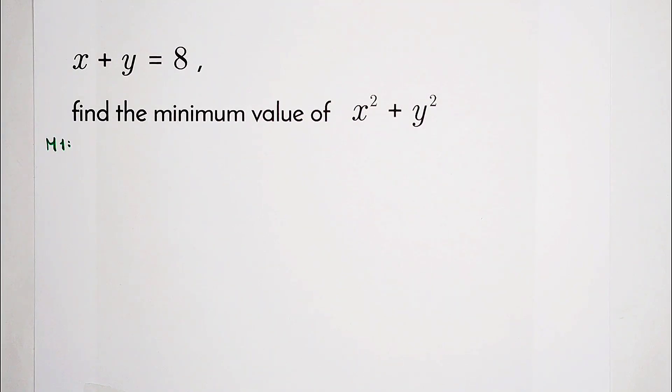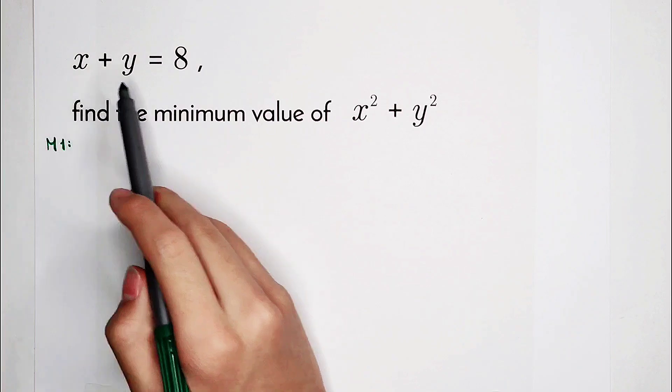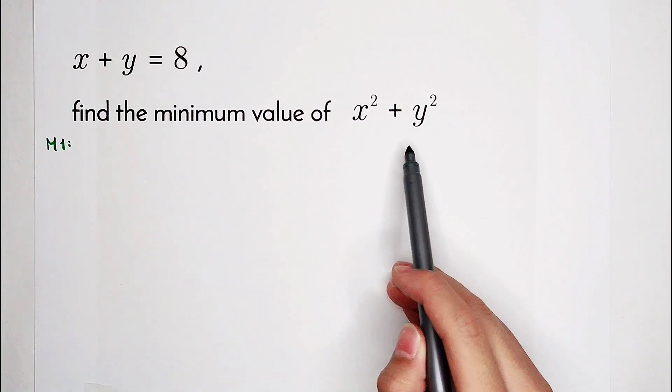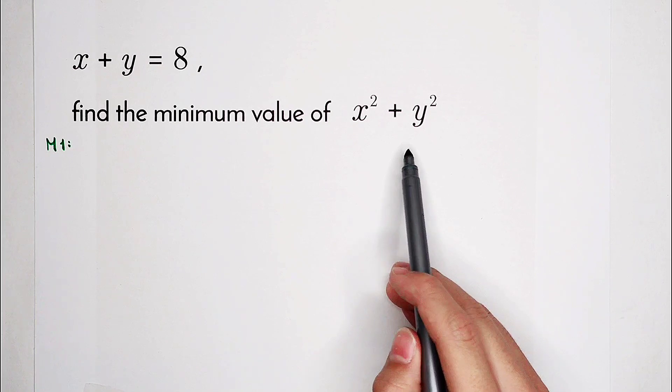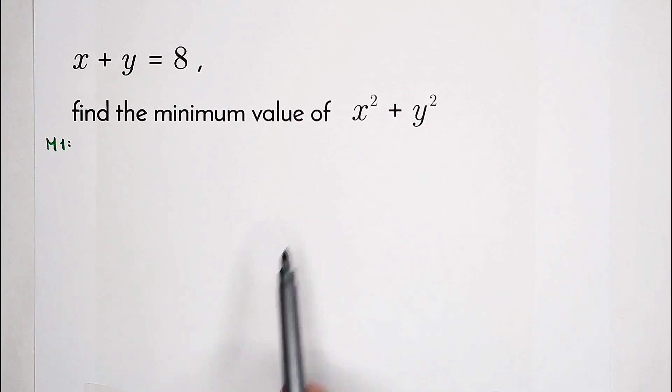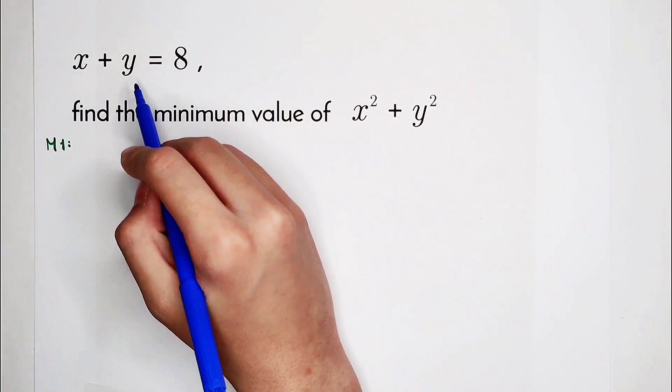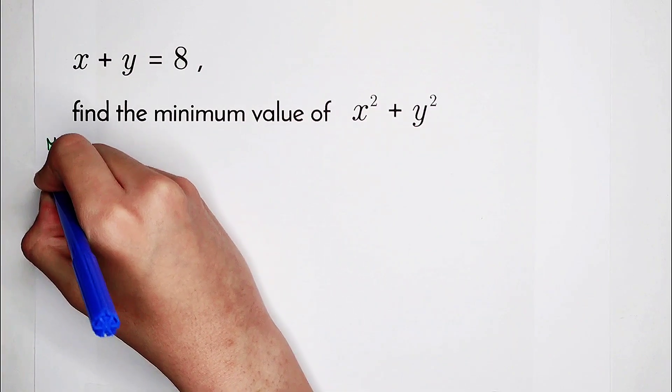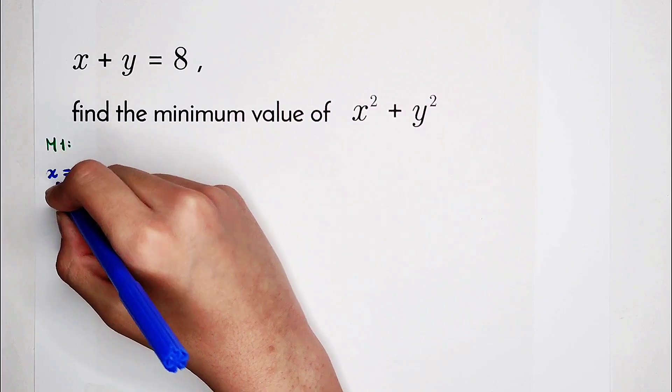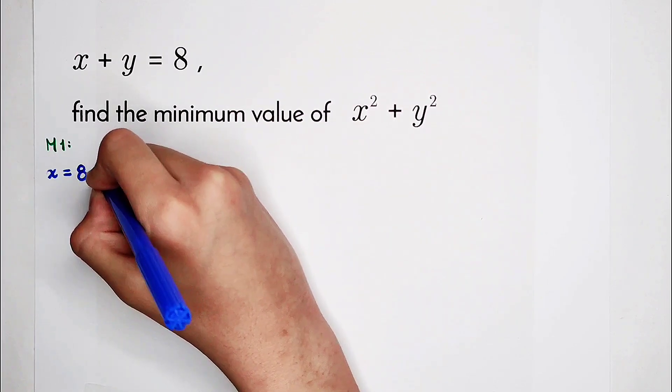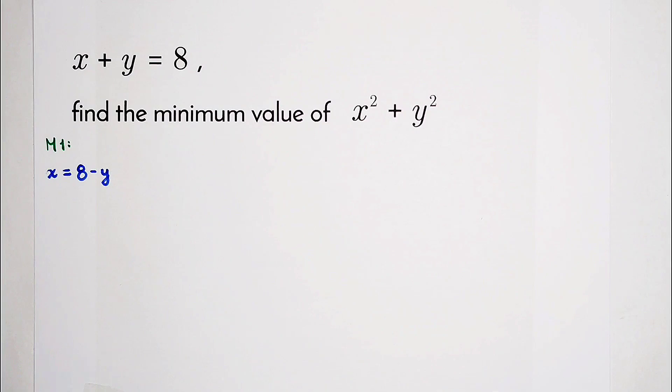The first method. Okay, what should we do? Of course, x, y - it's binomial. I don't like it, so what should we do? Of course, we should substitute. From the first term, x plus y equals 8, we can write x as a term of y: 8 minus y.